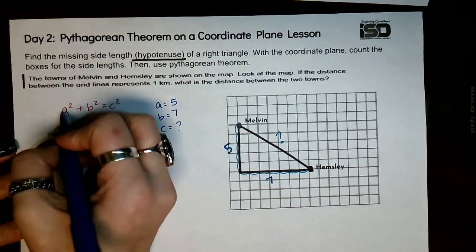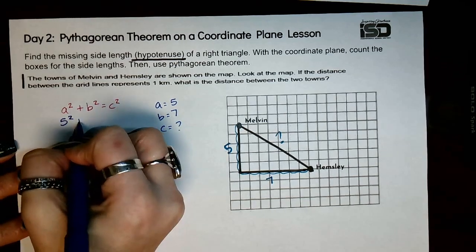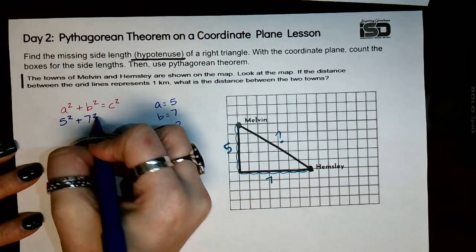So a, which is five, so I'd have five squared. B, which is seven, so then seven squared.